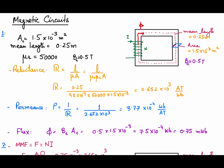The cross-sectional area of this core is 1.5×10⁻³ m². As the flux passes through this area, a flux density is established — that is flux per unit area — and that is given as 0.5 tesla, where tesla equals weber per meter square.